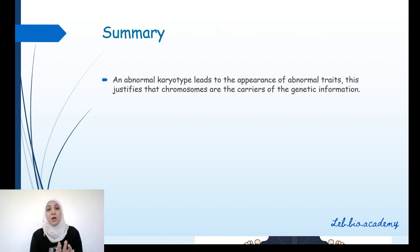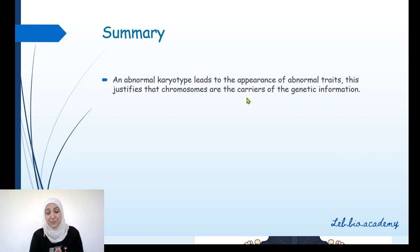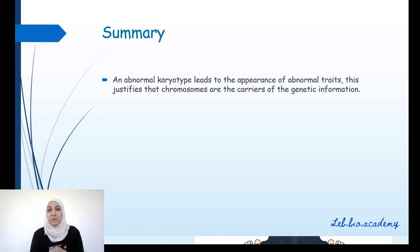In summary, an abnormal karyotype means you may have one missing chromosome or one extra chromosome. This leads to the appearance of abnormal traits, which shows that chromosomes are the carriers of genetic information — because when one chromosome is extra or missing, the individual will have abnormalities. Why can these genetic hereditary diseases normally not be treated? Don't forget that your positive thoughts are certainly the first steps to achieve your goal. Bye-bye.